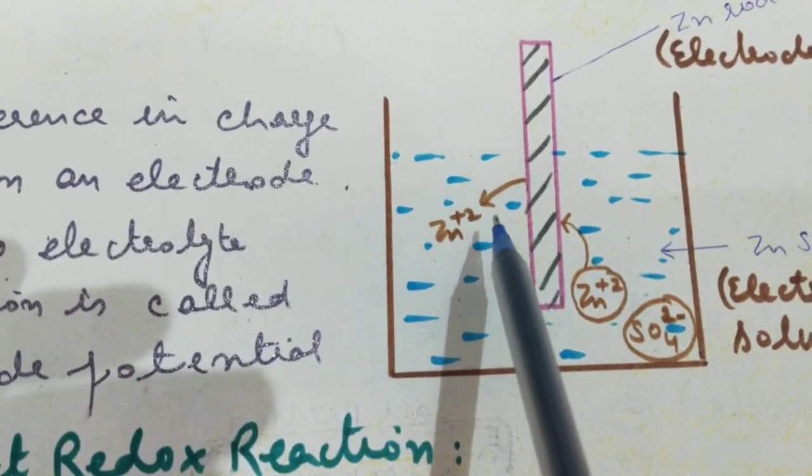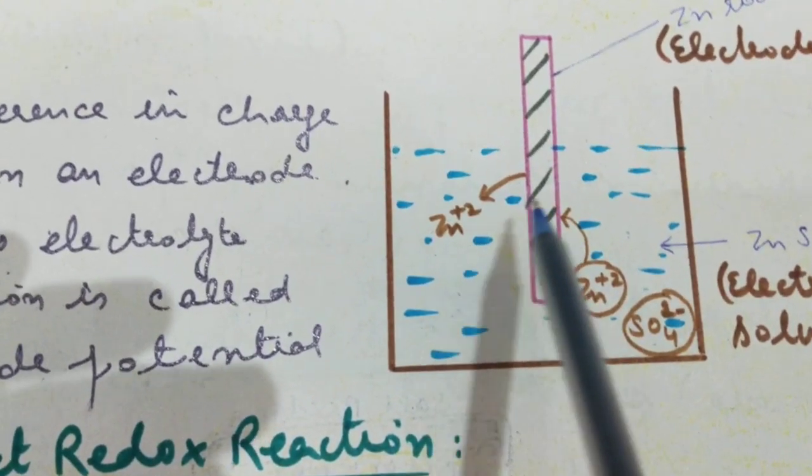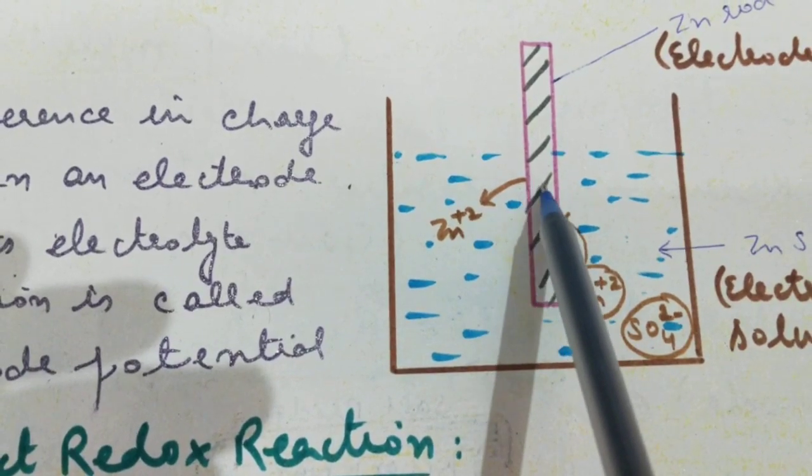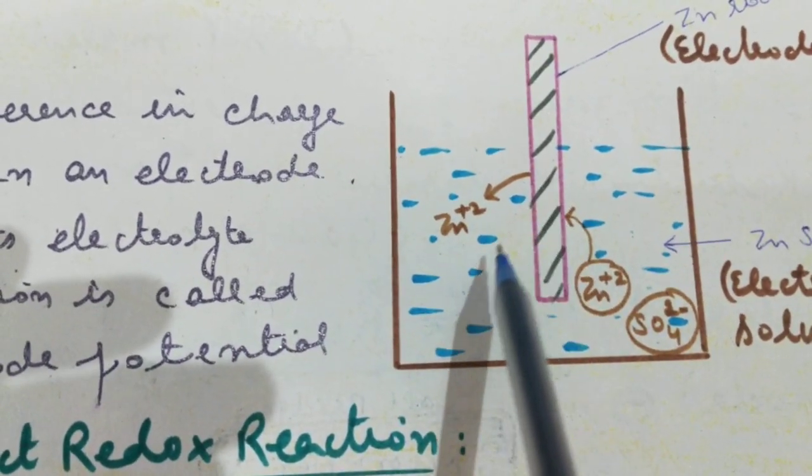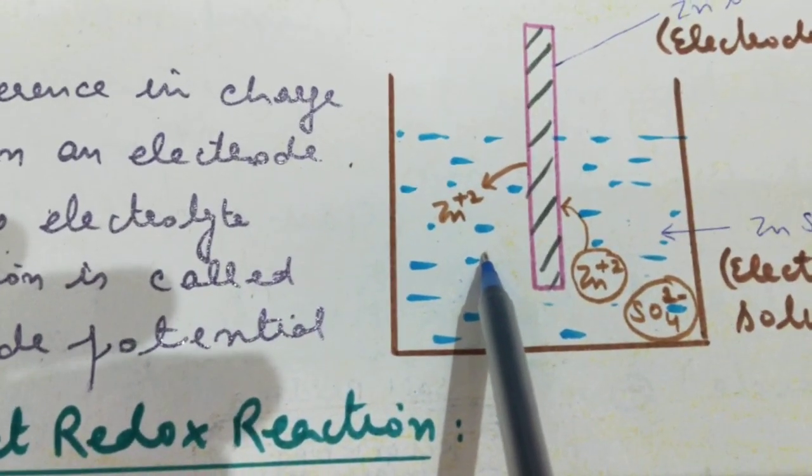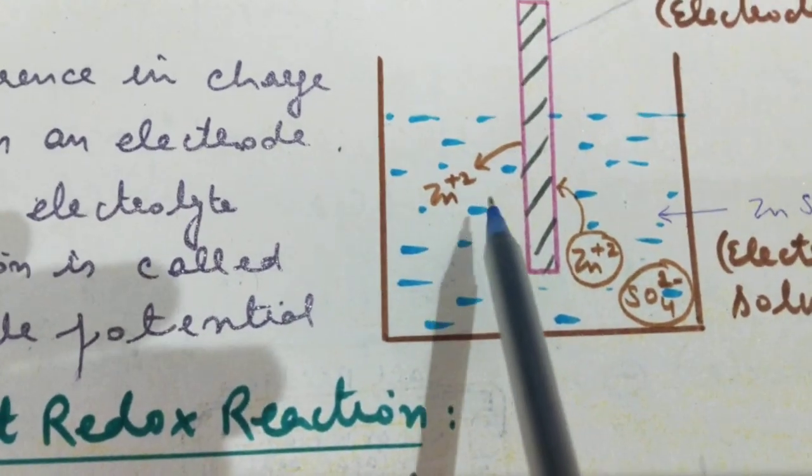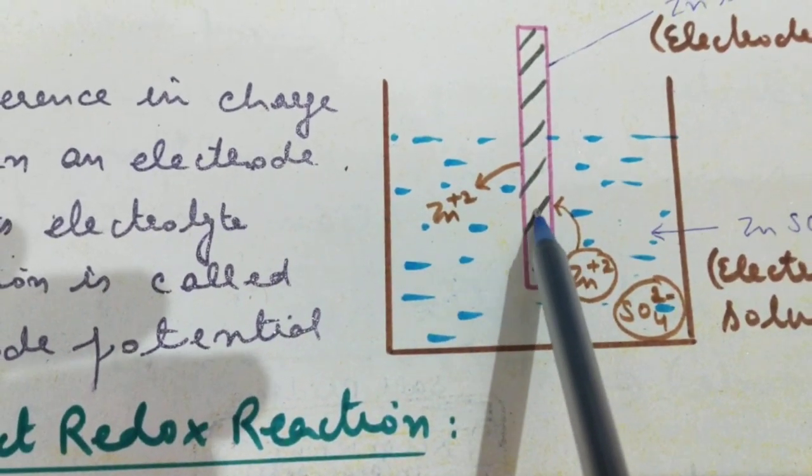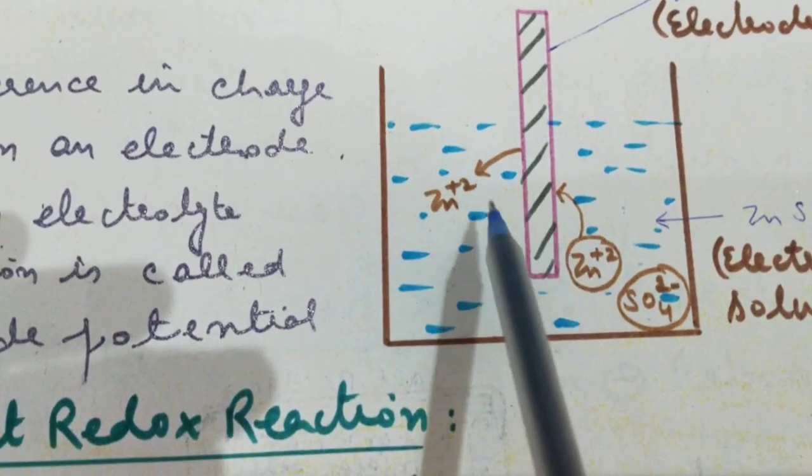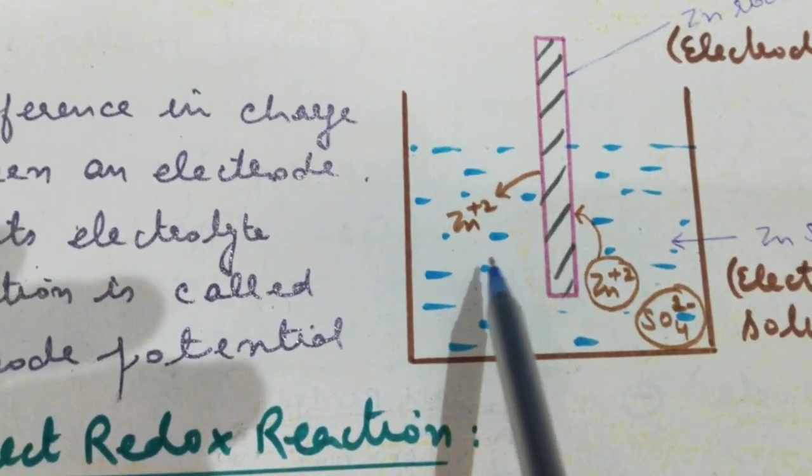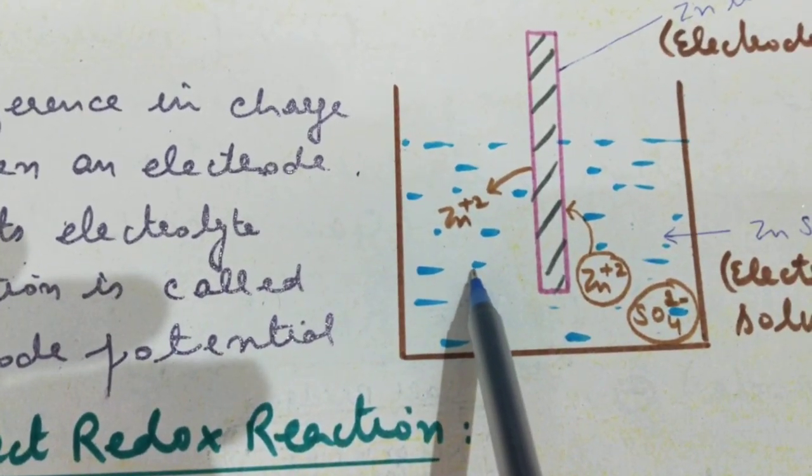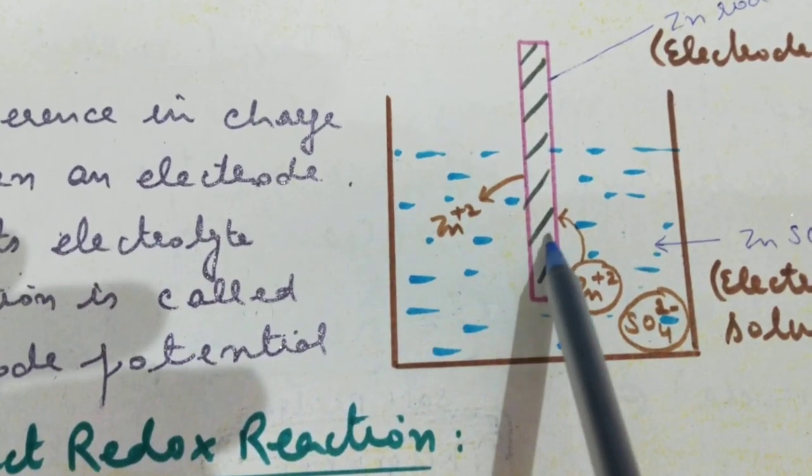Therefore, now there is a difference between the charge in this electrode and in this electrolyte solution. This difference in the charge developed between the electrode and its electrolyte solution is called electrode potential.